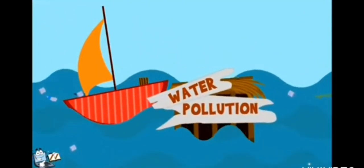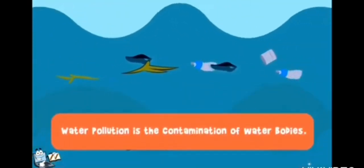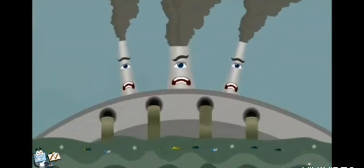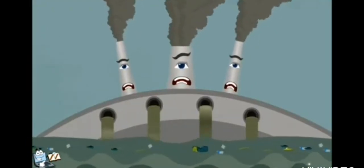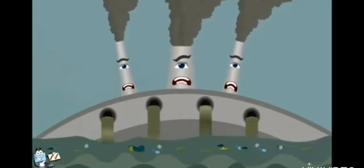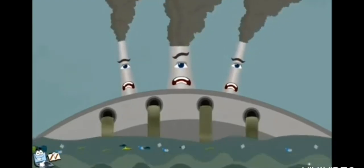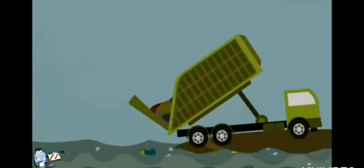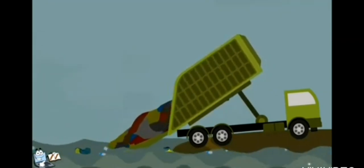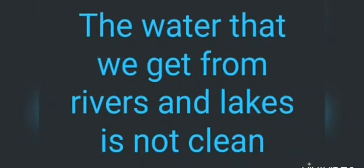Water pollution — the waste from homes and factories is thrown into the river, making the river water dirty. People also throw garbage into the river water. The water that we get from rivers and lakes is not clean. The water has germs in it, and drinking dirty water can also make us ill.